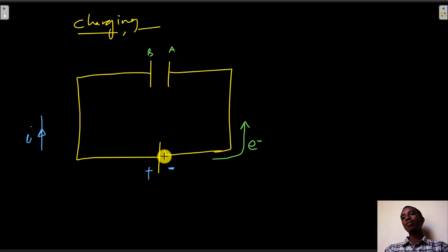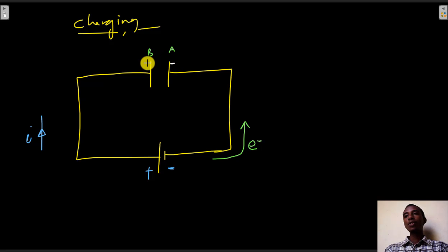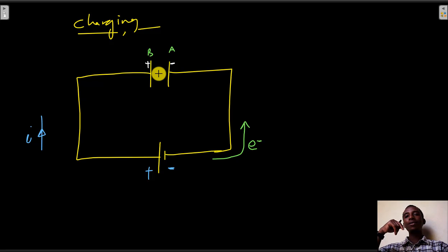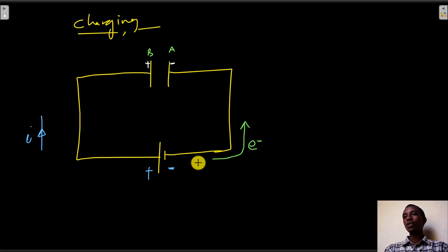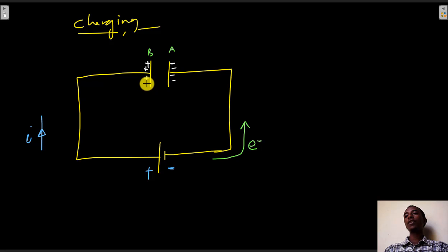As soon as the first electron leaves the battery and arrives at plate A, a negative charge is acquired by plate A. As we understand from electrostatics, a positive charge is then created by induction on plate B. This process keeps occurring in a cycle: for every electron added to plate A, we have a corresponding positive charge on plate B — negative, positive, negative, positive.